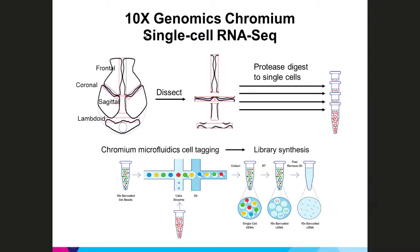To perform single cell sequencing we're using the Chromium system from 10x Genomics, which is a droplet-based method. Individual sutures — the frontal, coronal, sagittal, and lambdoid — are dissected and single cell suspensions are made by protease digestion. The Chromium system then combines single cells with oligo-coated beads and reaction solution in droplets encapsulated in oil, within which barcoded cell libraries are created, after which all cell libraries can be combined for sequencing.